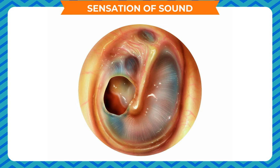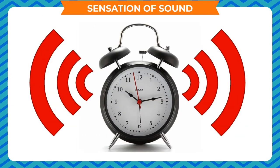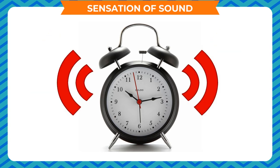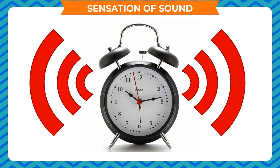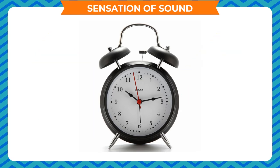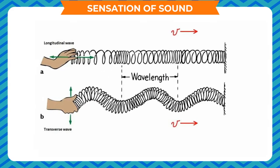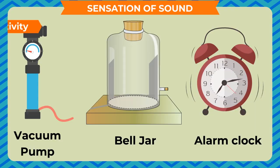All vibrating objects can start sound waves. On vibration, a molecule vibrates, and this vibration reaches the next molecule, making it vibrate. Due to this, the particles in the medium alternately come close and go far away — a phenomenon called compression and rarefaction respectively. Sound waves also form longitudinal waves.